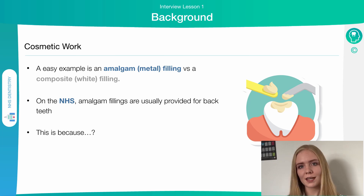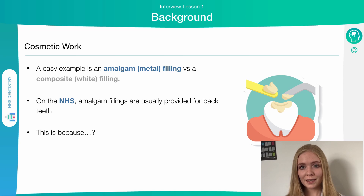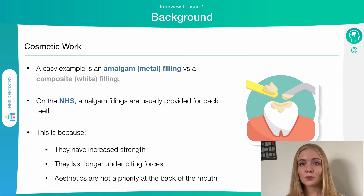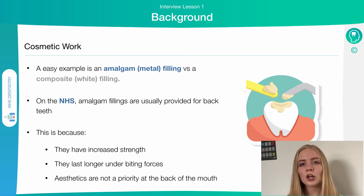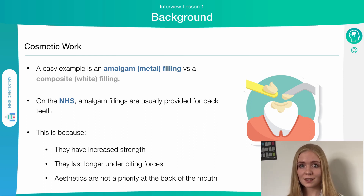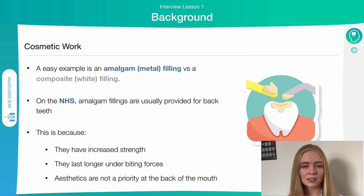In terms of cosmetic work, the NHS offers different types of fillings. Amalgam fillings are the metal ones, and composite fillings are tooth-coloured. Normally the NHS will only offer amalgam for fillings in the back of the mouth, because metal is much stronger than composite alternatives. The back of the mouth is the biting surface and a lot of force gets put on it, so you want strong material to withstand biting force and not break. Because it's right at the back, the metallic appearance is less of an aesthetic concern — patients can't really see it.